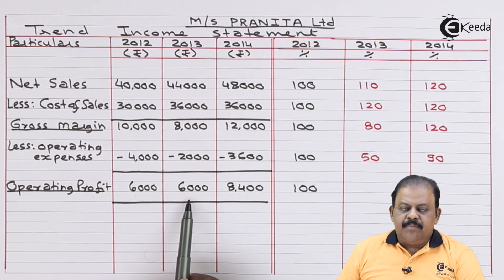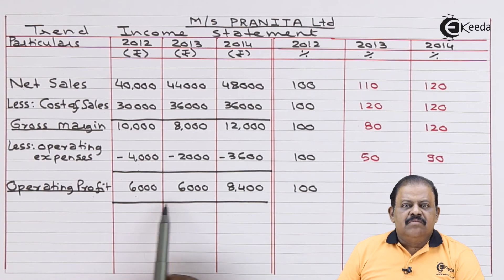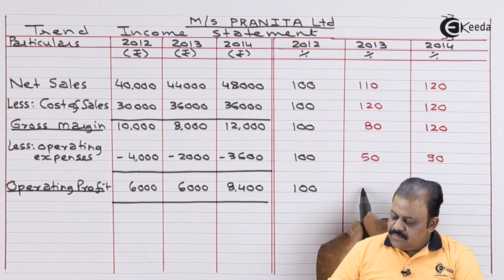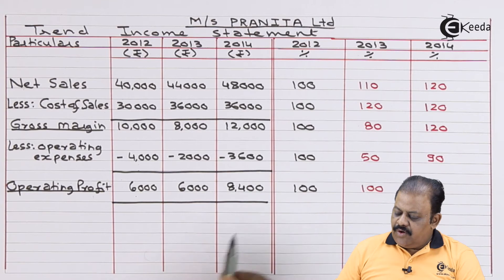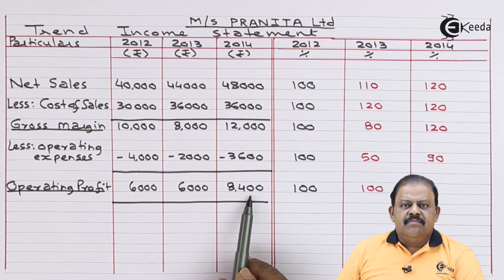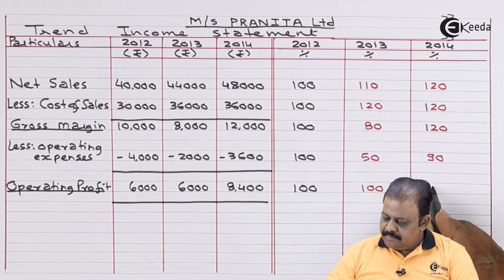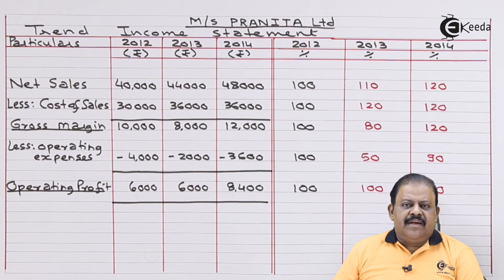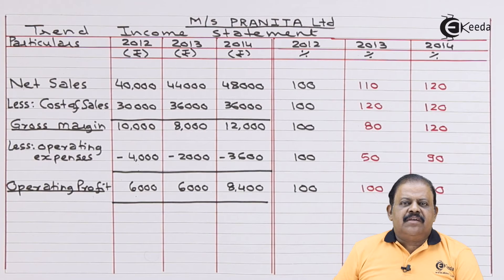Operating profit for 2013 is 6,000, and 2012 operating profit is also 6,000 — both years are the same, so the trend percentage is 100. For 2014, operating profit is 8,400 divided by 6,000 multiplied by 100, which equals 140. So we have completed the income statement trend analysis.